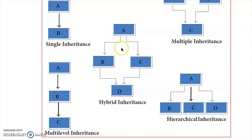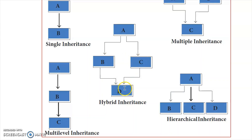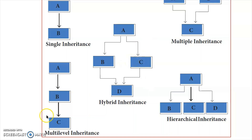In hybrid inheritance, hierarchical inheritance has one base class with two or three derived classes, and multiple inheritance has two base classes with one derived class. The combination of these is called hybrid inheritance. These are the five types of inheritance.